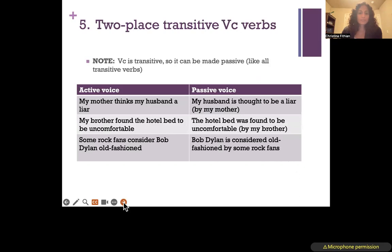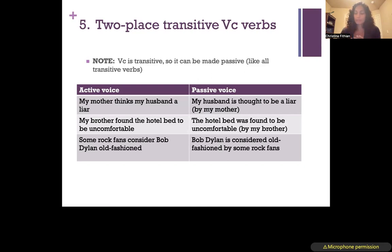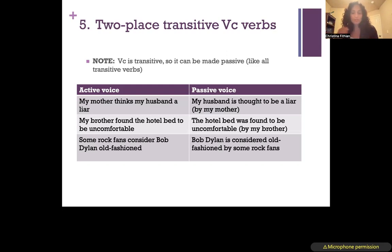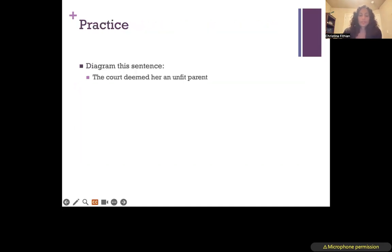VC is transitive, so it can be made passive just like VT and VG. The difference is that with VCs you get just one passive construction, unlike VG which can have two. Active: my mother thinks my husband a liar. Passive: my husband is thought to be a liar by my mother. Active: my brother found the hotel bed to be uncomfortable. Passive: the hotel bed was found to be uncomfortable by my brother. Active: some rock fans consider Bob Dylan old-fashioned. Passive: Bob Dylan is considered old-fashioned by some rock fans — that one sounds a bit more natural. One of your homework sentences is: the court deemed her an unfit parent.